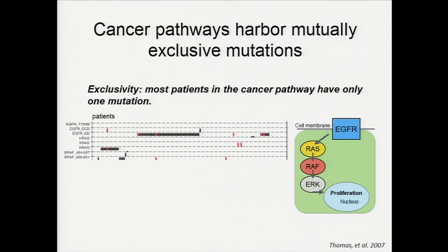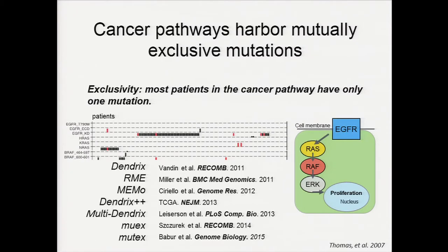Here I'm showing a previous study demonstrating that in the RAS-RTK signaling pathway, they contain sharply mutually exclusive mutations. As you can see from this mutation matrix with corresponding genes in this pathway, most patients in this mutation matrix only have one mutation. We call this exclusivity.